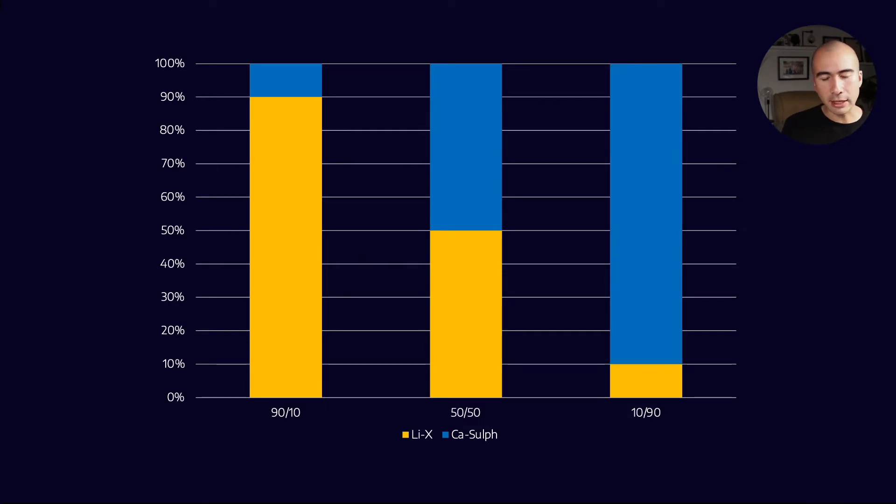The idea being that most of the time when you see incompatibility problems, it'll happen around that 50-50 proportion, but the 10-90 and the 90-10 help to simulate what happens when you're changing over, when you're purging one grease and replacing it with another. So that's the idea behind it, or the philosophy behind it.